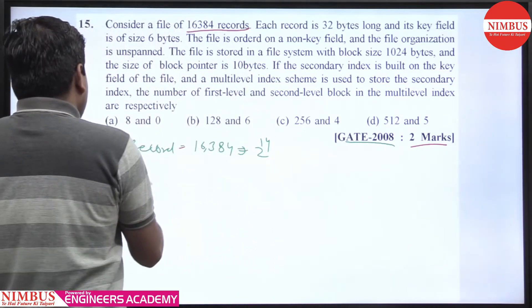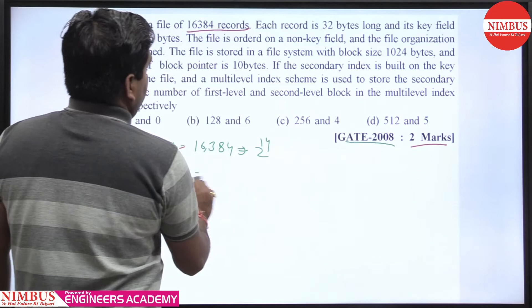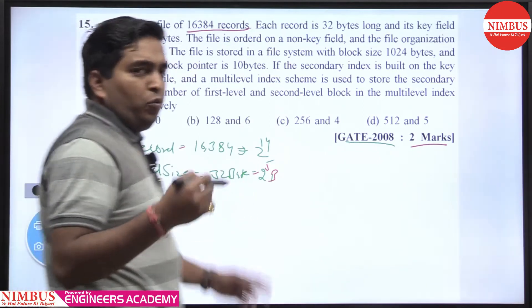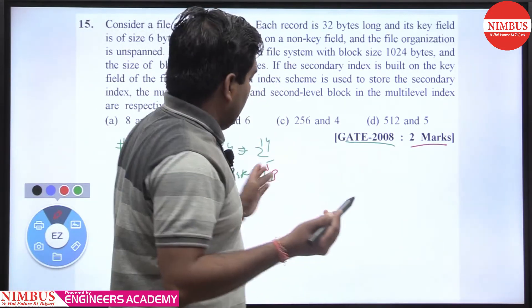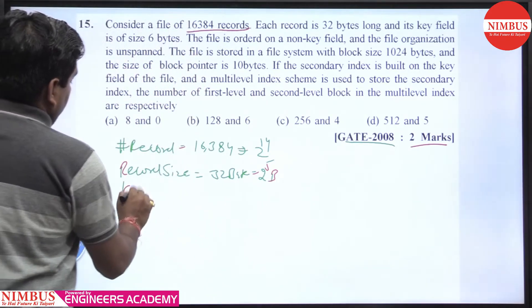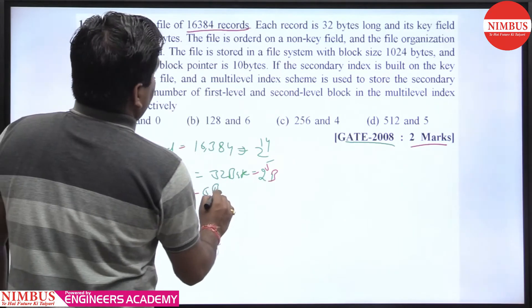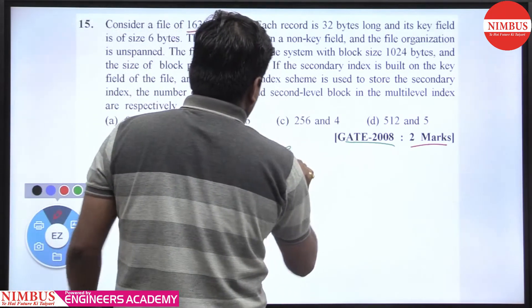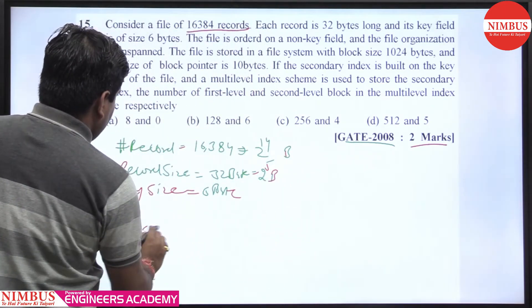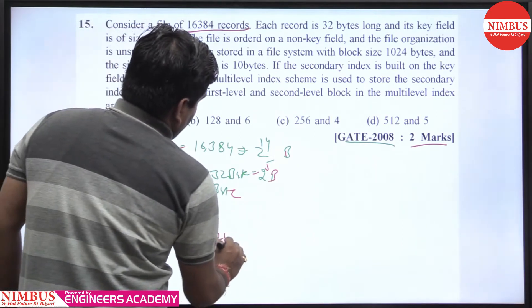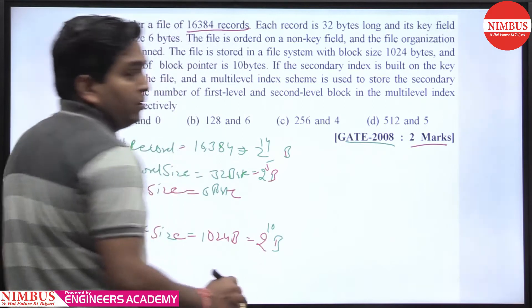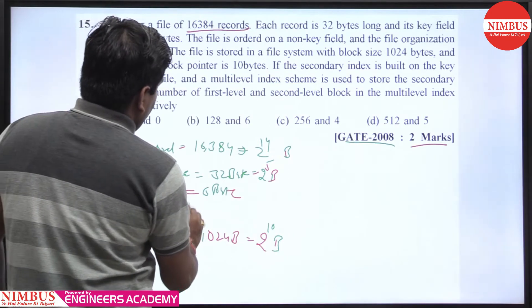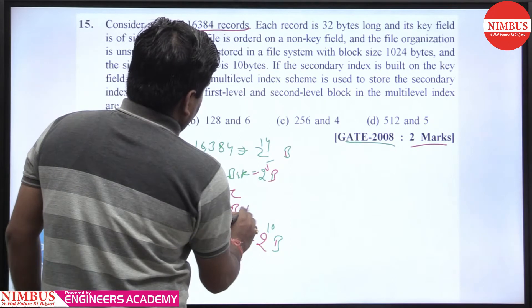Each record size is 32 bytes, that is 2 raise to power 5 bytes. We can convert into 2 raise to power form so that calculations become simple. The key size is 6 bytes, block size is 1024 bytes, that is 2 raise to power 10 bytes, and block pointer size is 10 bytes.